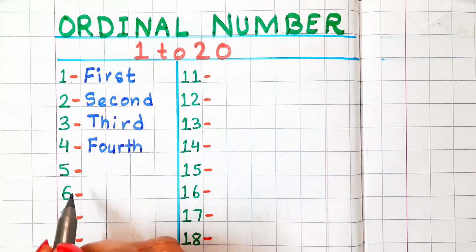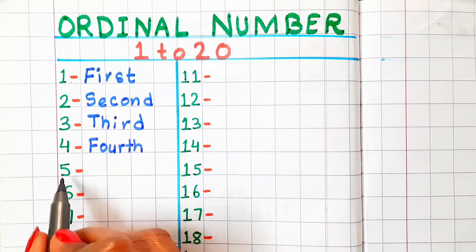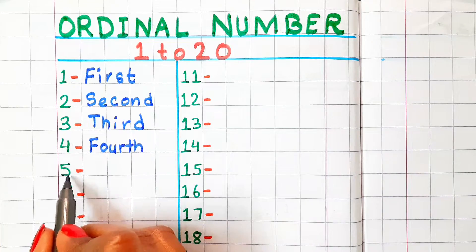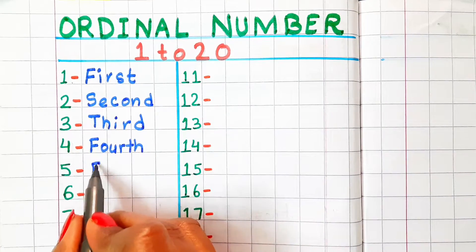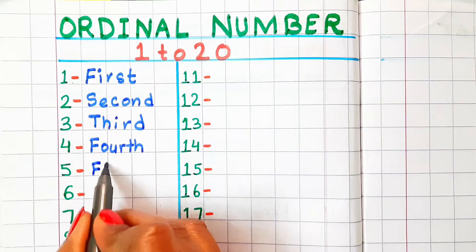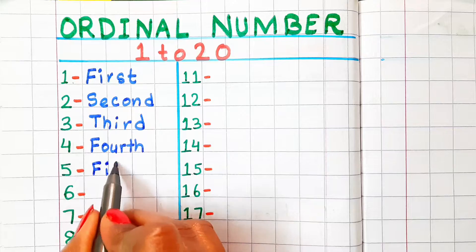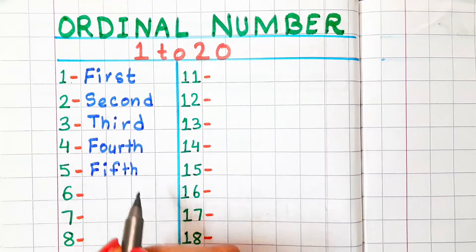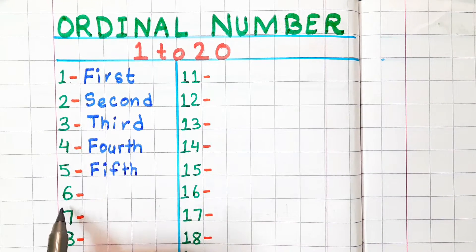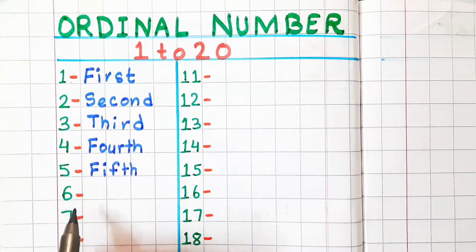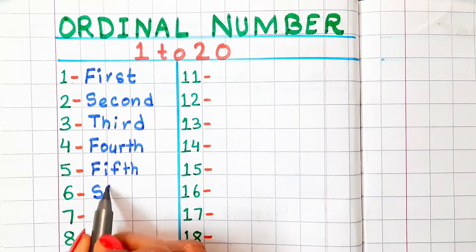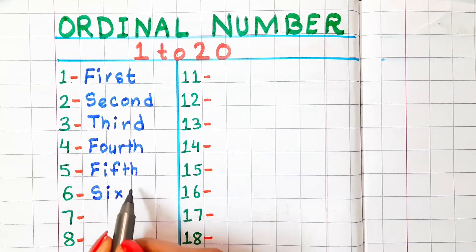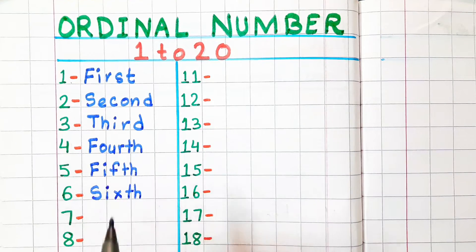5 — in ordinal number, it is called fifth and the spelling is F-I-F-T-H. 6 — in ordinal number, it is called sixth and the spelling is S-I-X-T-H.